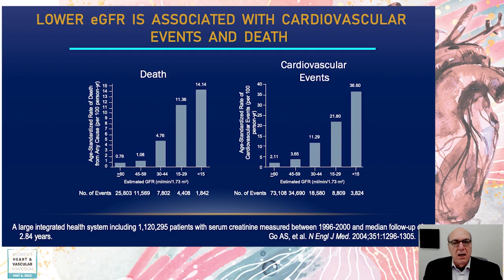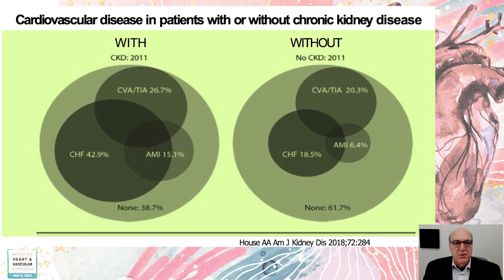Of the different maladies that you could have in heart disease in people with kidney disease, by far heart failure is the most common cause. You can see in these Venn diagrams it's three times more likely in people with kidney disease compared to people without kidney disease. Something for you to know, something for you to translate to the patient.